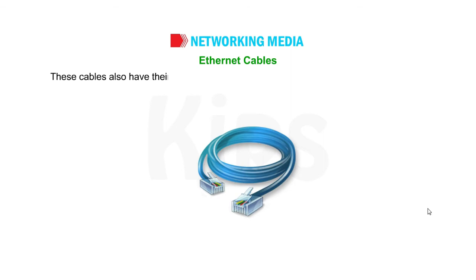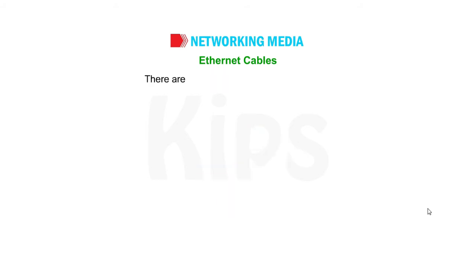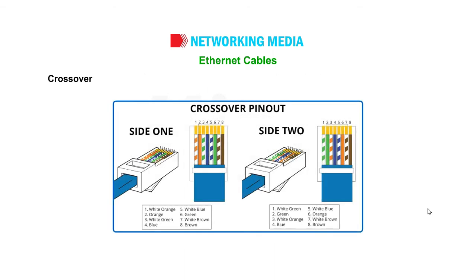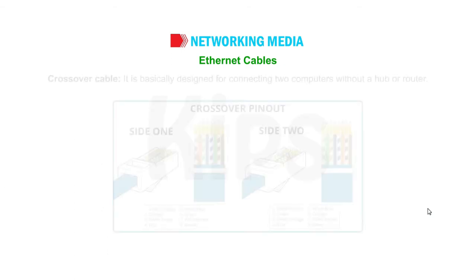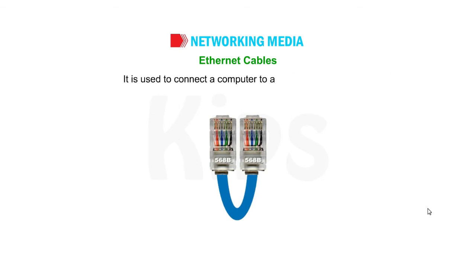These cables also have their limitations both in the distance that they can stretch without losing signal quality and their durability. There are mainly two types of Ethernet cable. Cross-over cable: it is basically designed for connecting two computers without a hub or router. Straight-through cable: this type of cable has both its ends identical to each other and is used to connect a computer to a router or a switch.